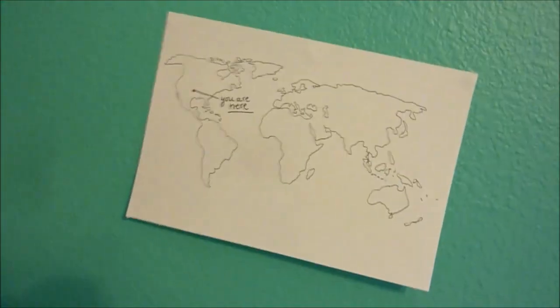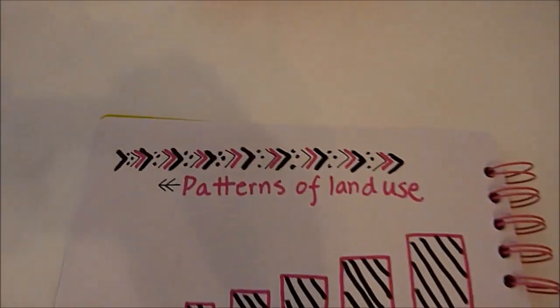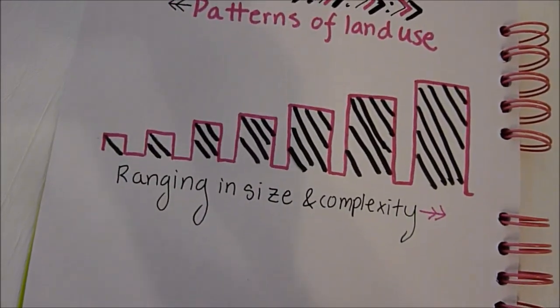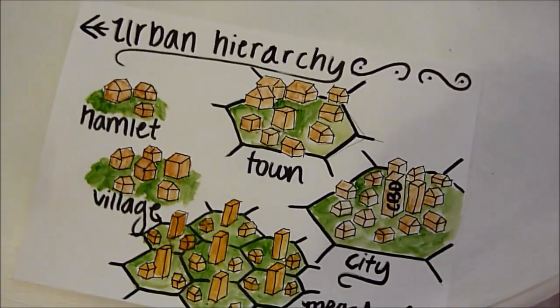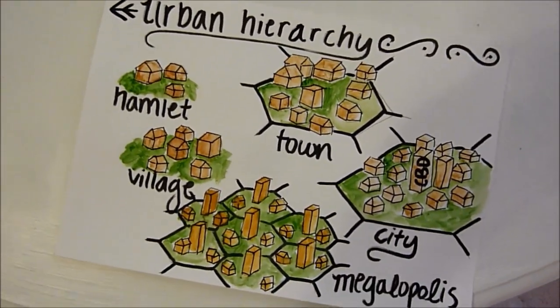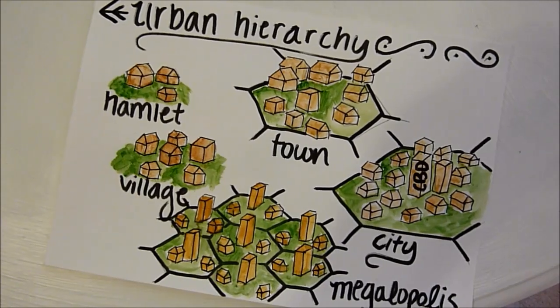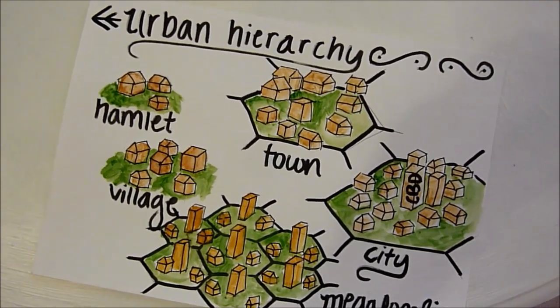This includes where cities are located and why, as well as the analysis of the patterns of land use. The settlements that have been created range in size and complexity of their functions. In order from smallest to largest, the settlements could be classified as a hamlet, village, town, city, or megalopolis.